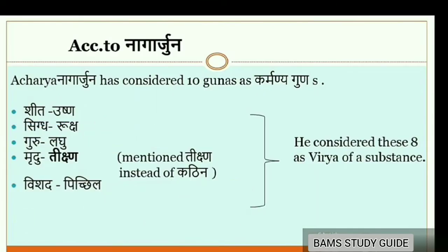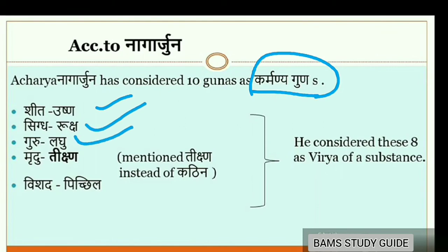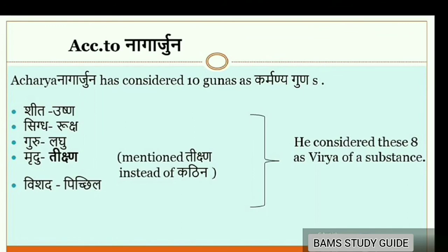Regarding Gunas mentioned by Acharya Nagarjuna: he considered 10 Gunas as Karmanya Gunas with special capabilities. These are Shita–Ushna, Snigdha–Ruksha, Guru–Laghu, Mridhu–Tikshna and Vishada–Pichila. He considered these first 8 as the Virya of a substance. Acharya Charaka mentioned the opposite of Mridhu as Kadhina, whereas Nagarjuna mentioned it as Tikshna.